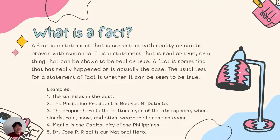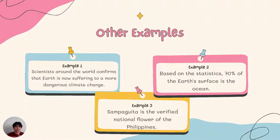Manila is the capital city of the Philippines — which is correct and obvious. Dr. Jose P. Rizal is our national hero. We also have some more examples. Scientists around the world confirm that the earth is now suffering from a more dangerous climate change — our cue here is the word 'confirms' and it is proven by scientists. Based on statistics, 70% of the earth's surface is ocean, which is true and proven. And lastly, Sampaguita is the verified national flower of the Philippines.